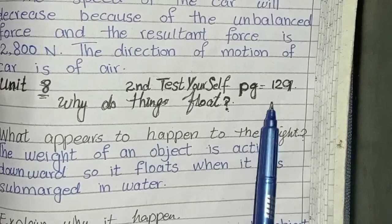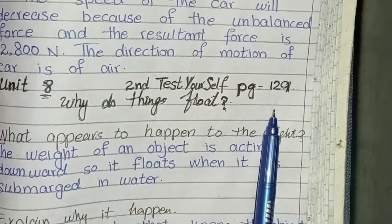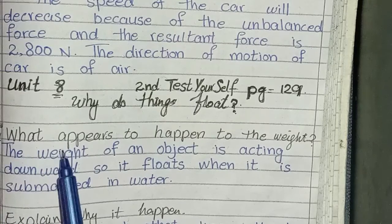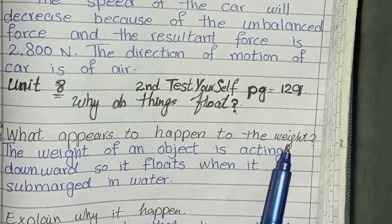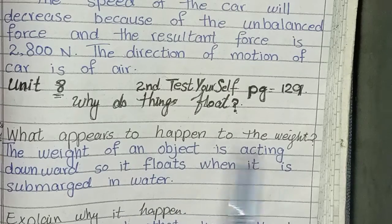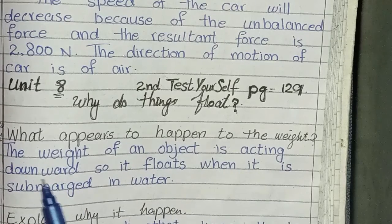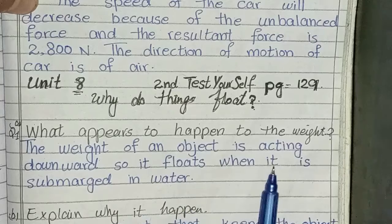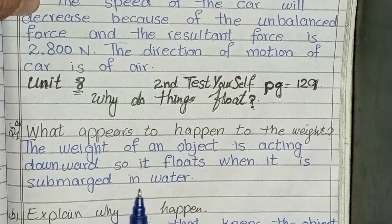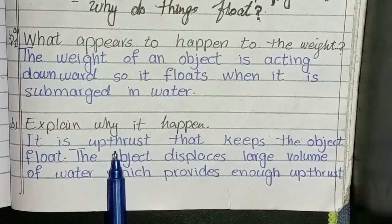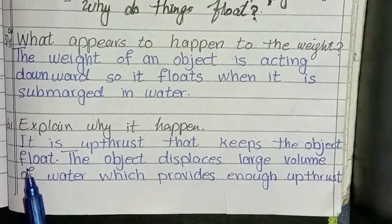Second Test Yourself, which is on page 129. The first question: What appears to happen to weight? The weight of an object is acting downward, so it floats when it is submerged in water. Explain why it happened: it is upthrust that keeps the object afloat.